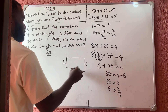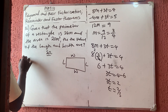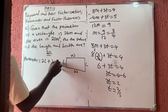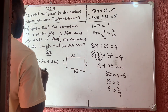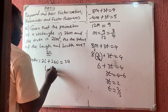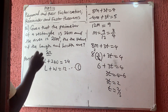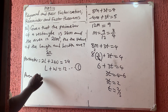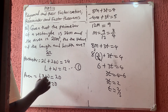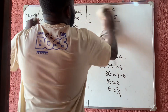Drawing the rectangle: the perimeter equals 2l plus 2w, and they say the perimeter equals 24. Dividing both sides by 2 gives l plus w equals 12 — equation 1. For the area: length times width equals lw equals 20 — equation 2.